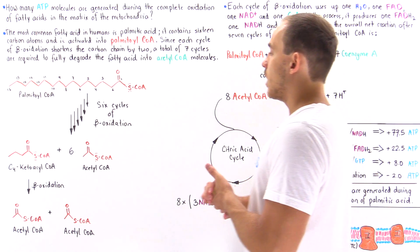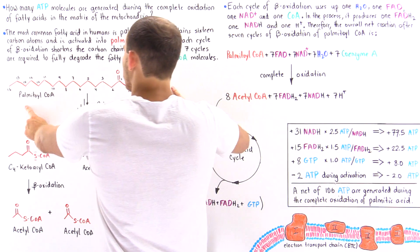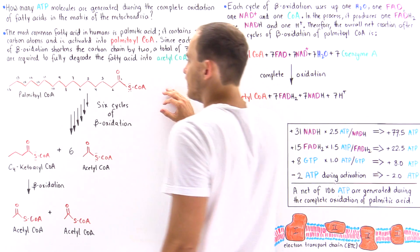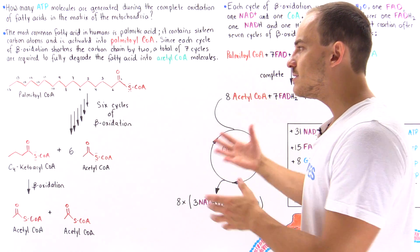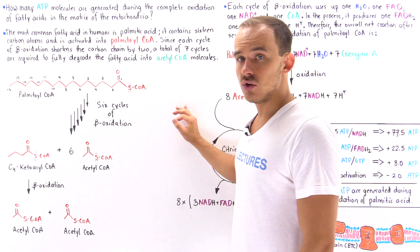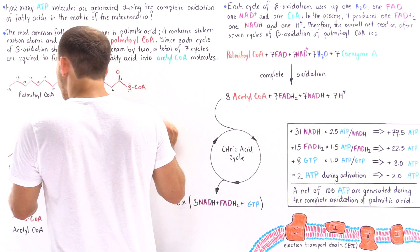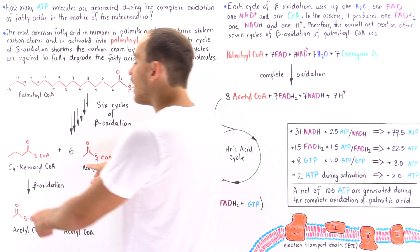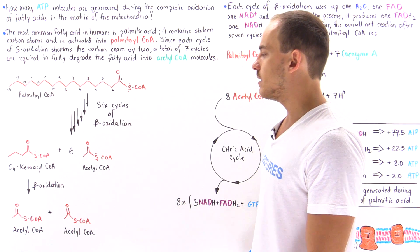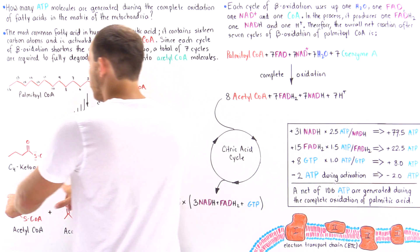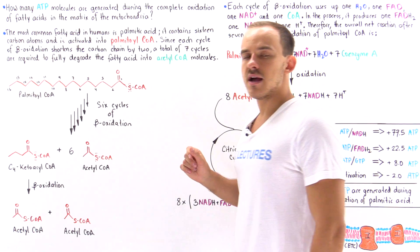To see exactly why seven cycles, let's look at the following diagram. We begin with palmitoyl coenzyme A, which has 16 carbon atoms in its hydrocarbon chain. After six cycles of beta oxidation, we release six acetyl coenzyme A molecules, leaving a molecule with four carbon atoms — the C4 ketoacyl coenzyme A. When this molecule undergoes one more beta oxidation, it produces two identical acetyl coenzyme A molecules. That's why we need six plus one, so seven cycles of beta oxidation, to produce a total of eight acetyl coenzyme A molecules.